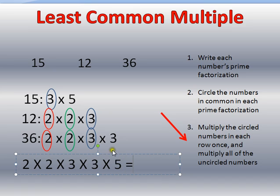So 2 times 2 is 4, times 3 is 12, times 3 is 36. And then I have to multiply it by 5. And 36 times 5 is 180. So the least common multiple of 15, 12, and 36 is 180.